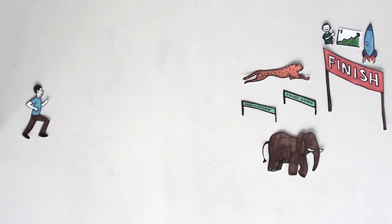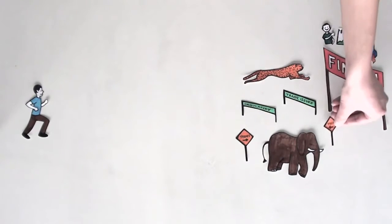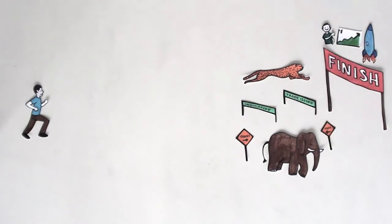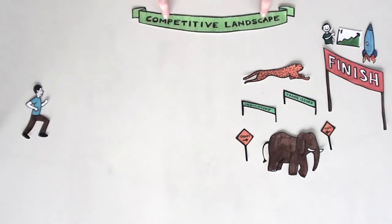There are other market events that can detour your strategy as well. Being able to foresee and plan for disruptive technologies, industry consolidation, and industry trends can help ensure you reach your goal. In the competitive intelligence world, we call this the competitive landscape.